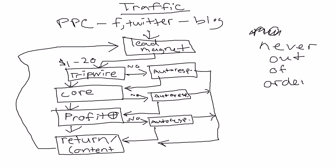So to recap: you get traffic from blogging, videos, Twitter, Facebook, or pay-per-click advertising. You always offer a free product first — your lead magnet — in exchange for email information. Then email marketing really starts with the cheap tripwire, then the core product at maybe $25–$50 a month or a one-time fee, and then the profit maximizer that gets you a few hundred or few thousand dollars per transaction — that's what makes your profits go through the roof. Remember: the tripwire is not for profit, it's for recovering marketing costs and turning subscribers into customers.